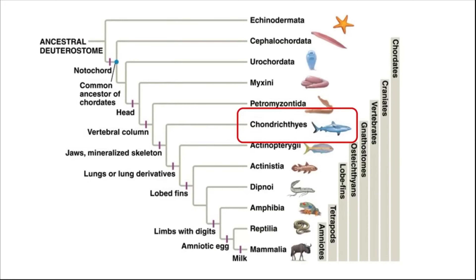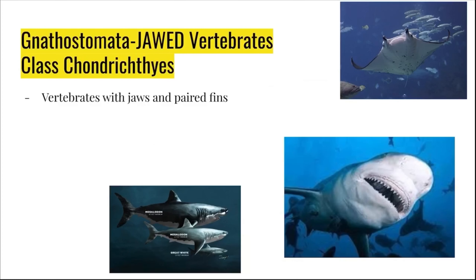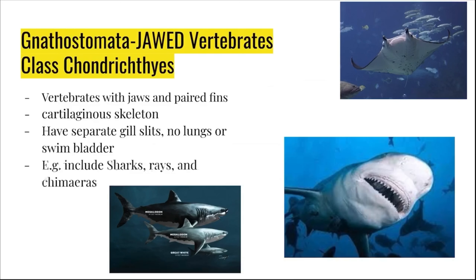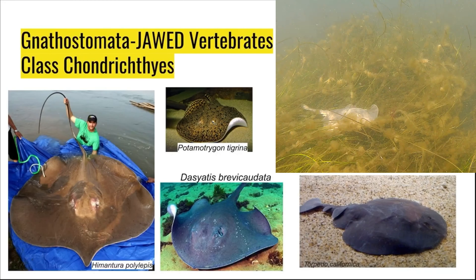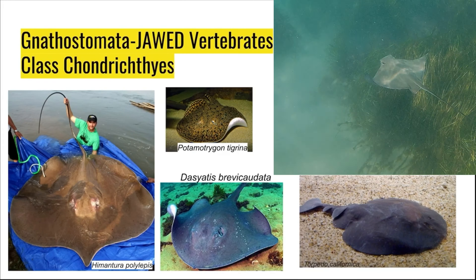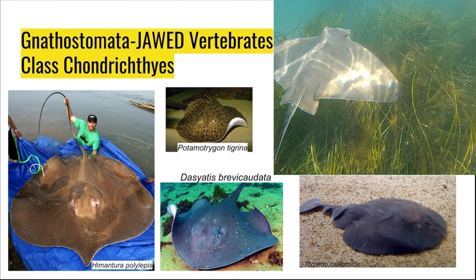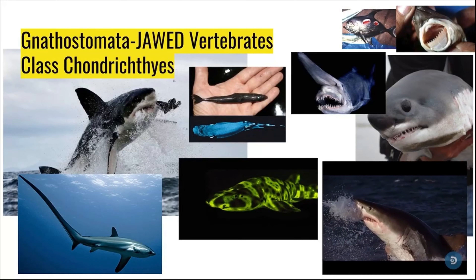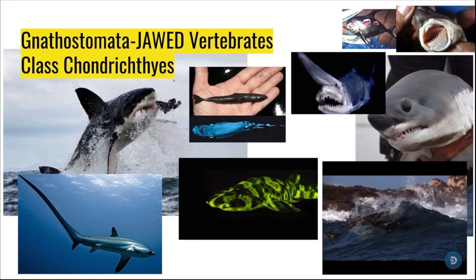The next group of vertebrates we'll talk about are the gnathostomes. Gnathostomes are the jawed chordates. The first group of gnathostomes are Chondrichthyes. Chondrichthyes include several familiar organisms. The gnathostomes have vertebrae with jaws and paired fins. They also have a cartilaginous skeleton. Examples include sharks, rays, and chimeras. Here you can see several different examples of rays. On the bottom left is a freshwater species. Chondrichthyes also include sharks — here are a bunch of different examples.